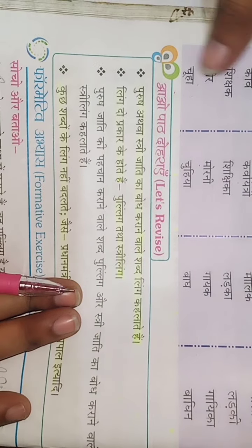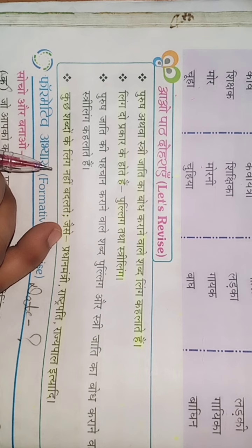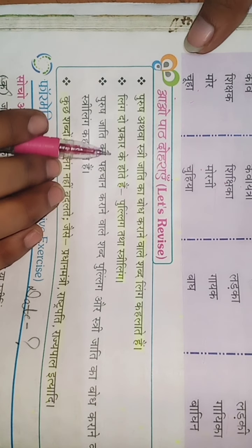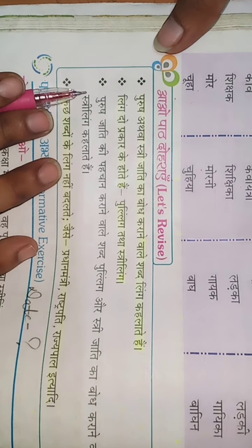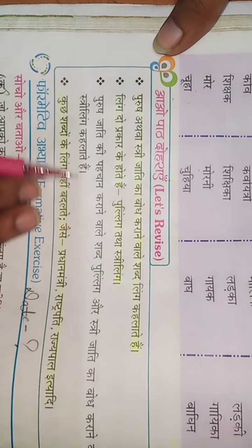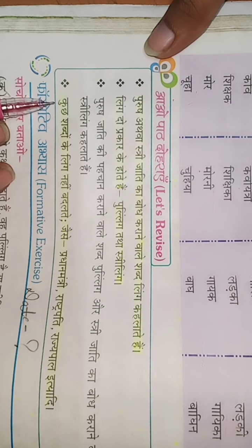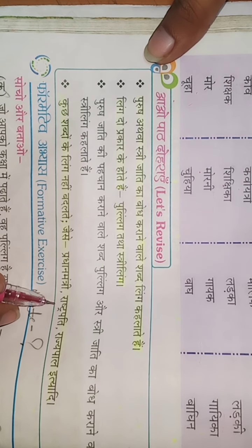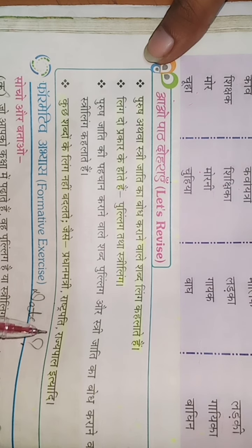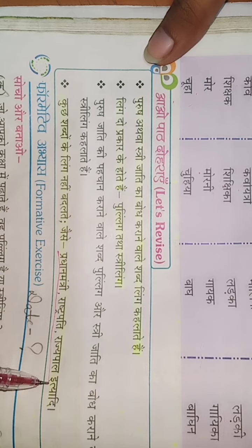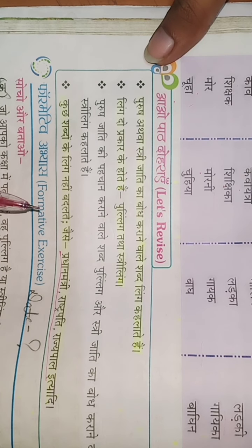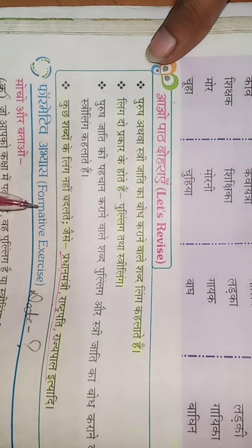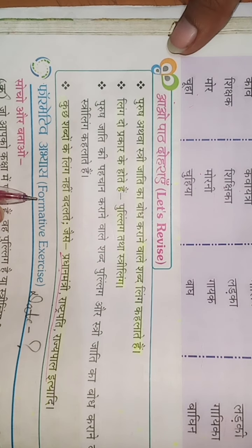Purush athwa stri jati ka bodh karane waale shabd ko Ling kehte hain. Ling do prakar ke hote hain: Pulling tatha Istri Ling. Kuch shabdon ki Ling kabhi nahi badlati, jaise pradhan mantri, rashtrapatni, rajyapal — these always remain as one gender. Pradhan mantri hota hai ya hote hain, but it will never be changed into Istri Ling. So thank you everyone for watching this video, and I hope you have understood this chapter.